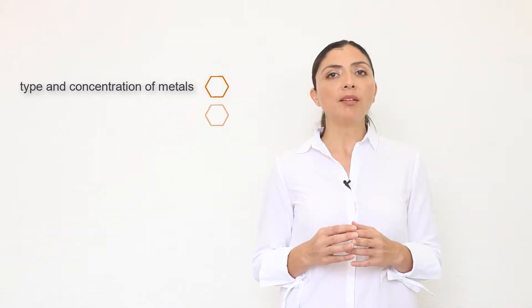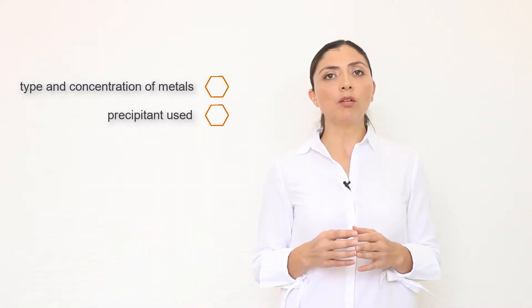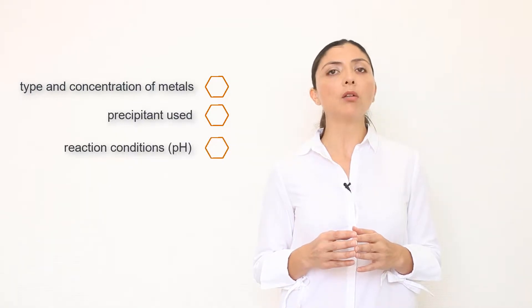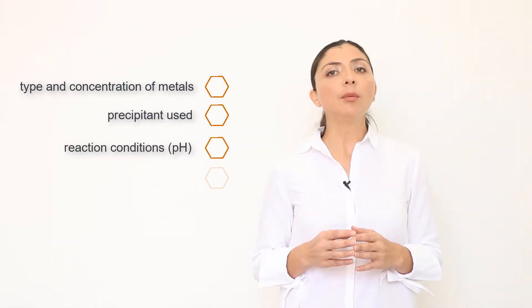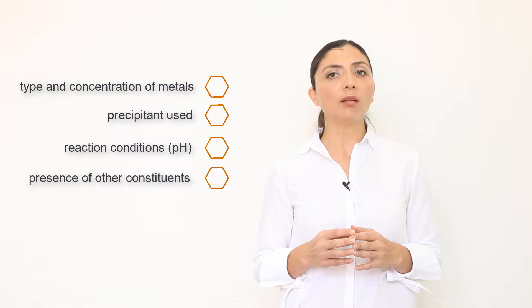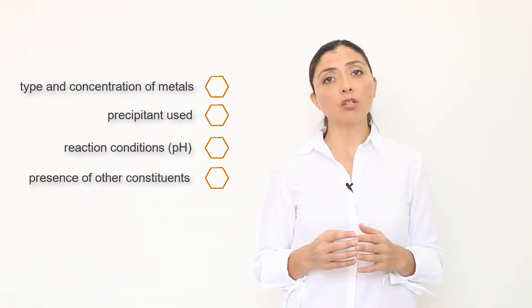The effectiveness of a chemical precipitation process is dependent on several factors including the type and concentration of metals, the precipitant used, the reaction conditions, particularly the pH, and the presence of other constituents that may inhibit the precipitation reaction.